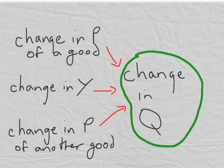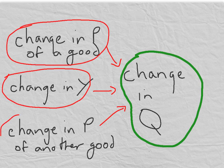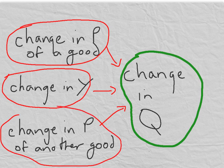Now this something else can be the change in the price of the good, price of the product, or it can be the change in the income of consumers of the product, or it can be a change in the price of another product which is related to the first product.